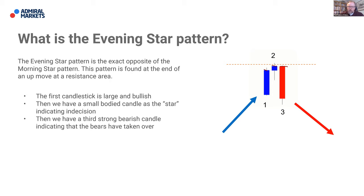Philip asks: is the second candle always in the direction of the original trend? Not necessarily. Very often it will be, but it's not entirely necessary. Candle two could be a bullish or bearish rejection candle, a bullish or bearish doji, a shooting star, or a hanging man. What becomes clear is once that third candle has completed — in the case of an evening star, a strong bearish candle — that gives you the confirmation that a reversal has occurred over these last three candles, and we're expecting price to drift down.